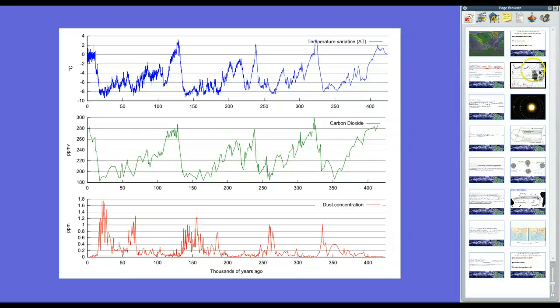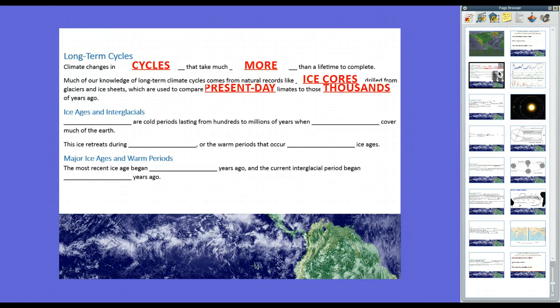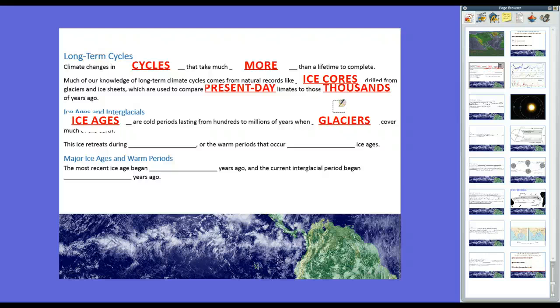For example, we have graphs like this that look at changes in temperature, the amount of carbon dioxide in the air, and parts per million in dust. And this comes from ice cores in Antarctica. So what we do is we drill down, we pull out chunks of ice, and we analyze it just like we do tree rings. The cycles of climate on Earth. Generally, we consider changes on Earth in terms of ice ages and interglacial periods. Ice ages are cold periods lasting hundreds of millions of years when glaciers, which are big, giant rivers of ice, cover the Earth. But the ice will retreat in what we call interglacial periods. That's the warm periods that occur between the ice ages. Now, if there are no glaciers on Earth at all, we call that warm periods.